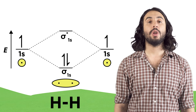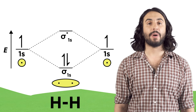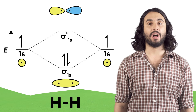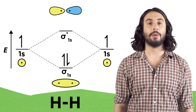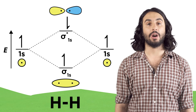The number of orbitals must be conserved, so when two atomic orbitals come together to form molecular orbitals they will form one bonding orbital and one anti-bonding orbital. The electrons in the covalent bond occupy the lower energy bonding orbital. Since any orbital, atomic or molecular, can hold two electrons, if one electron were to become excited it could jump from the sigma bonding orbital to the sigma star anti-bonding orbital.